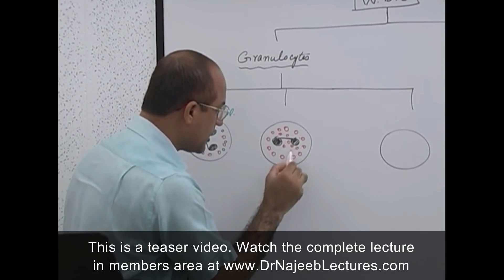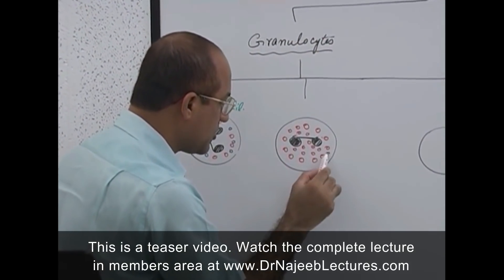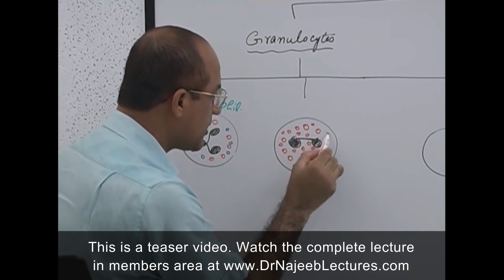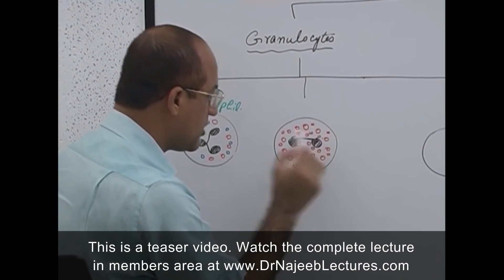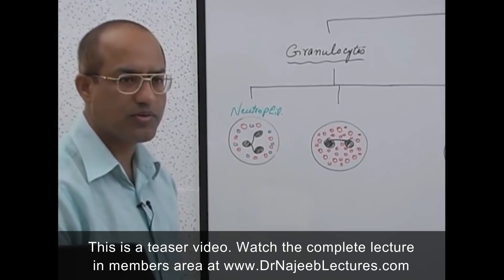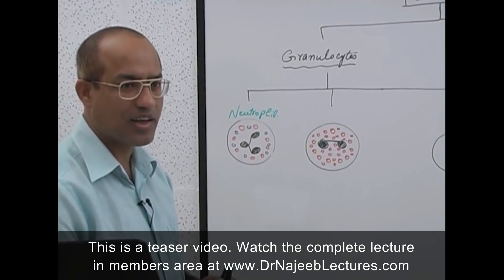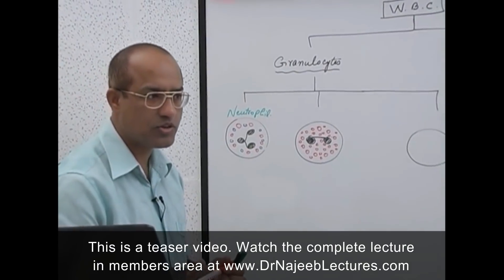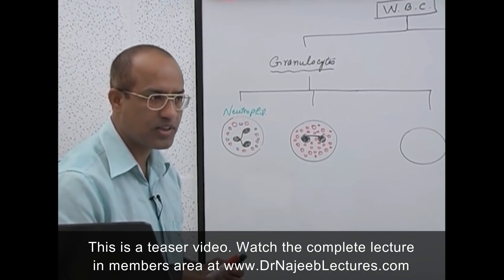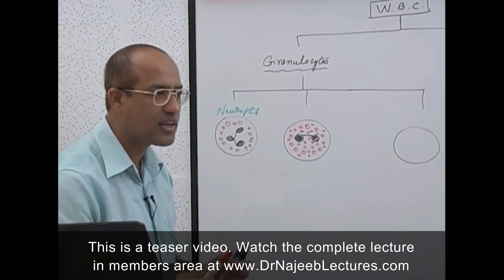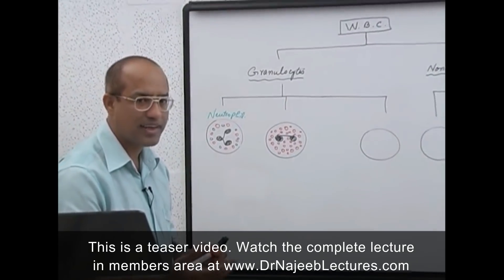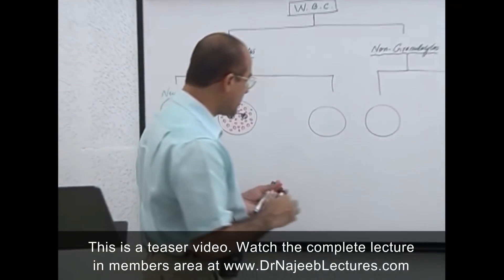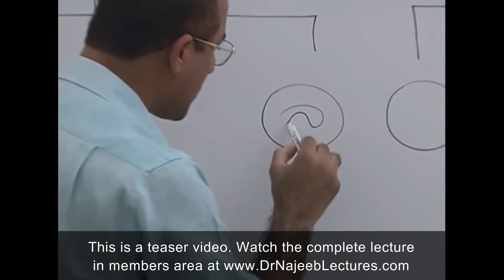The specific granules of eosinophils take acidic dyes, giving a red color. Eosinophils are 'red color lovers' — 'eosin' means red/pink, and 'phil' means loving. These are cells which love the red color because their granules take that red color.